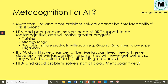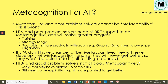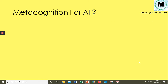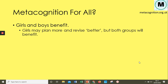On the flip side, high prior attainers and good problem solvers are typically better metacognitively, but we cannot presume they are all superstar metacognitive practitioners. They are likely to be better, but it's not universal — not every high prior attainer is a good metacognitive practitioner. They may have implicitly picked up some skills by watching others, but they still have a huge range of strategies to learn and improve. Both boys and girls will benefit.